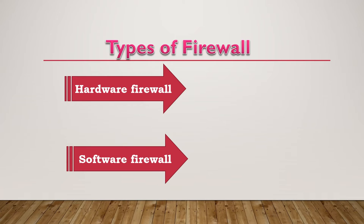Then hardware firewall. It is a physical piece of equipment planned to perform firewall duties. A hardware firewall can be a computer or a dedicated piece of equipment which serves as a firewall. Hardware firewalls are incorporated into the router that is situated between the computer and the internet gateway.